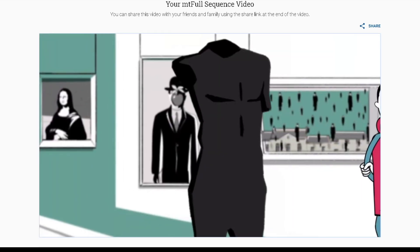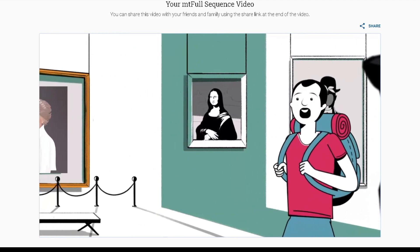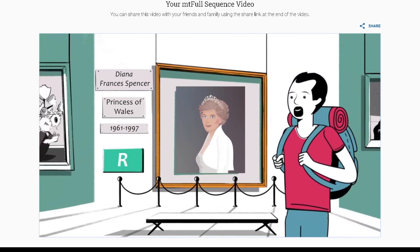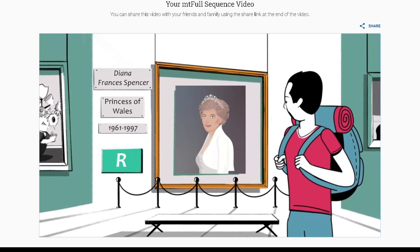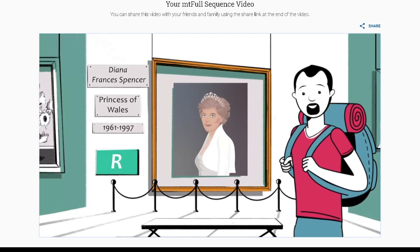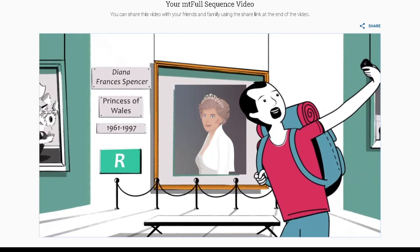We also discovered that you share a common ancestor with at least one notable person whose DNA has been analyzed. One such person who shares your R haplogroup is Princess Diana of Wales. Diana was a member of the British royal family from 1981. She was born in 1961 and died in 1997.